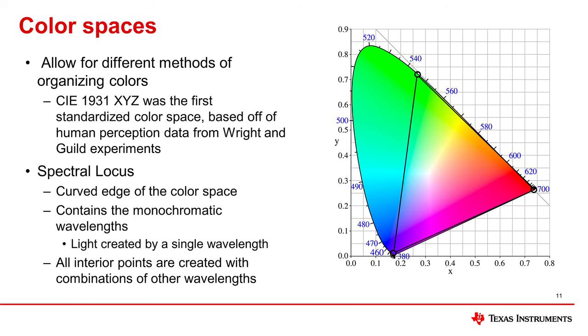For example, depending on the amount of each of these selected monochromatic wavelengths, all of the colors within this triangle can be reproduced. Each color has a specific x and y coordinate.